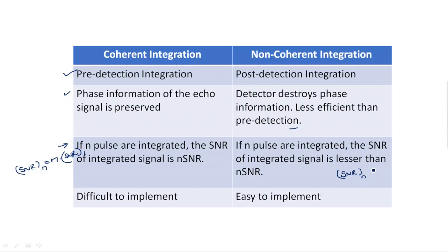For n number of pulses in non-coherent integration, the overall SNR is less than n times the signal-to-noise ratio of individual pulses, because some information is lost. Coherent integration is more difficult to implement, while non-coherent integration is easier to implement.